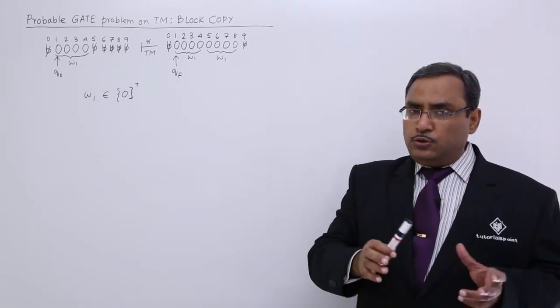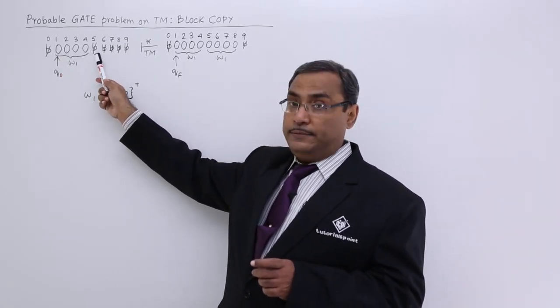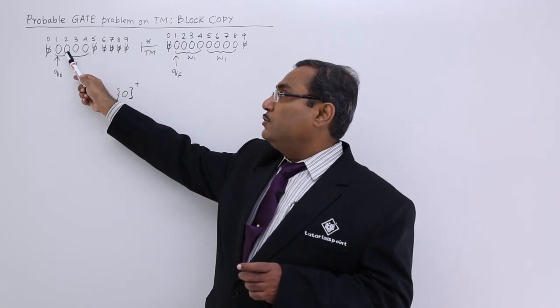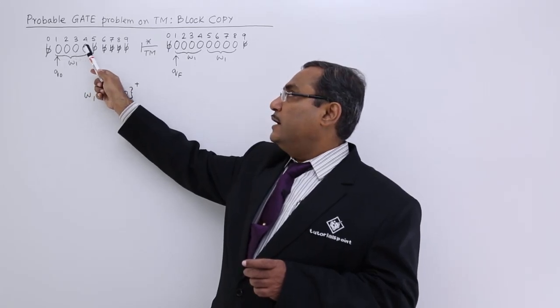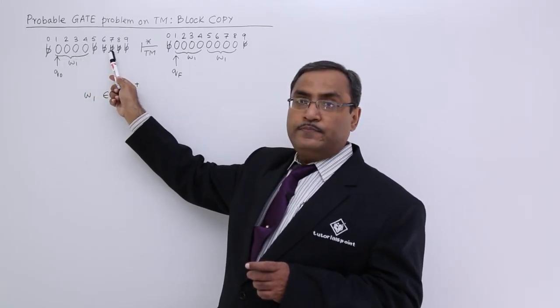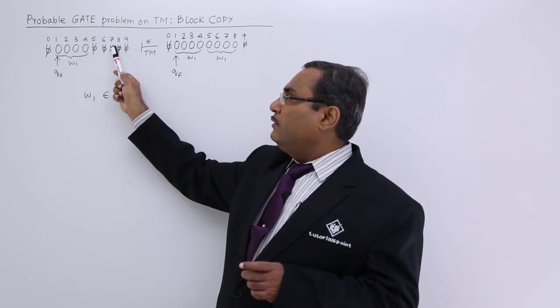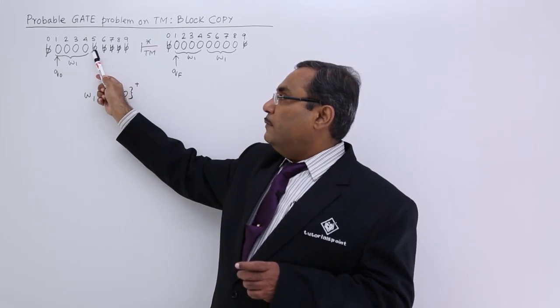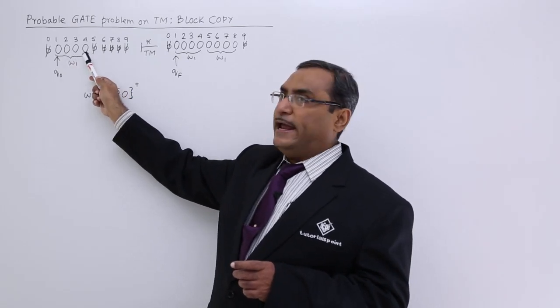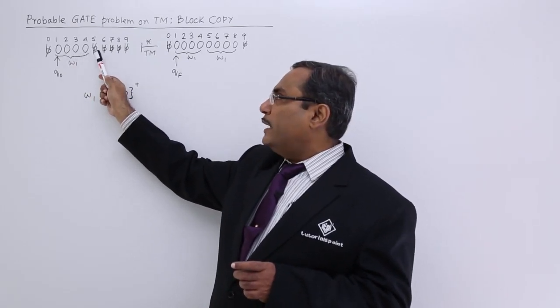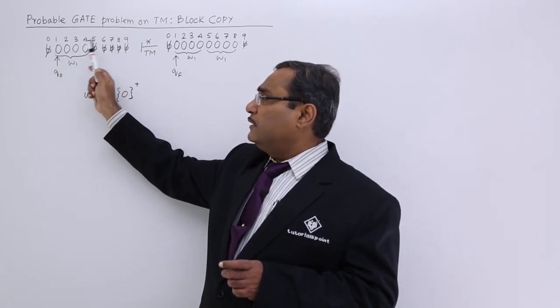That is why we can do a planning in this way: I shall make this 0 to x, I shall make this blank to y. Now, while traversing back, before y if I get 0, but if all the 0's have got copied, I shall get x. Then after x, if I get y, see here, after the first iteration...